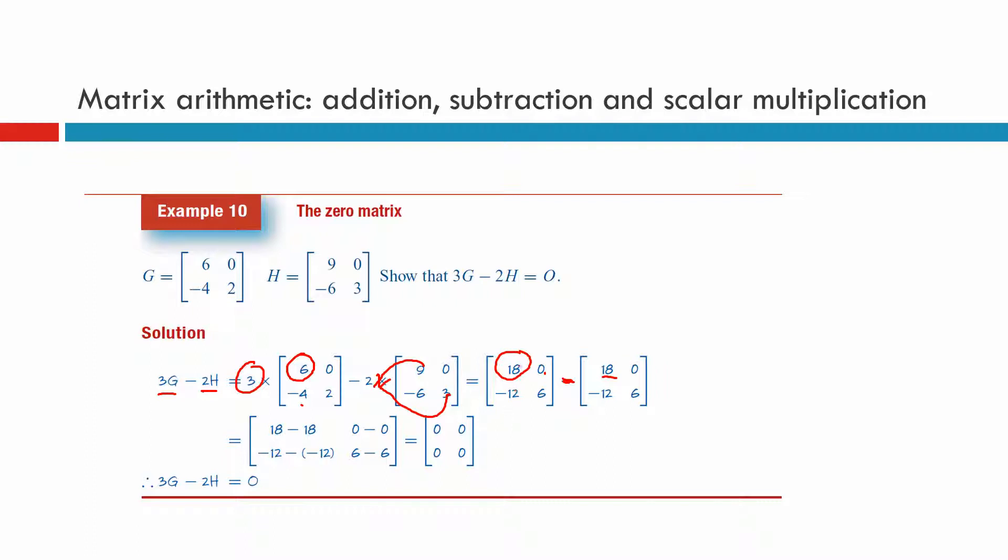18 minus 18, zero. Zero minus zero, zero. Negative 12 minus a negative 12 becomes plus 12. So you get zero and six take away six gives us zero. There we go. We've shown that it's like that.